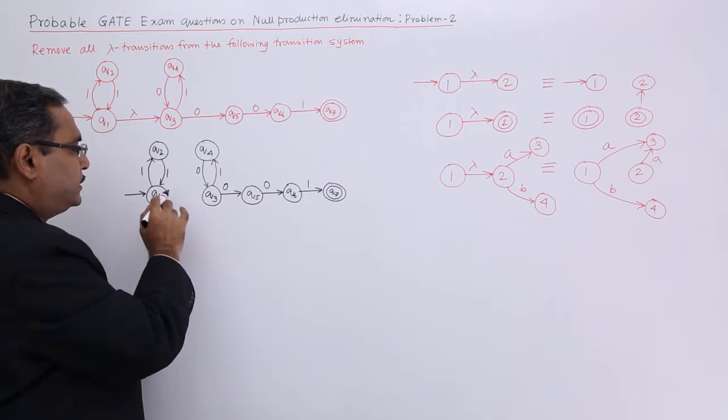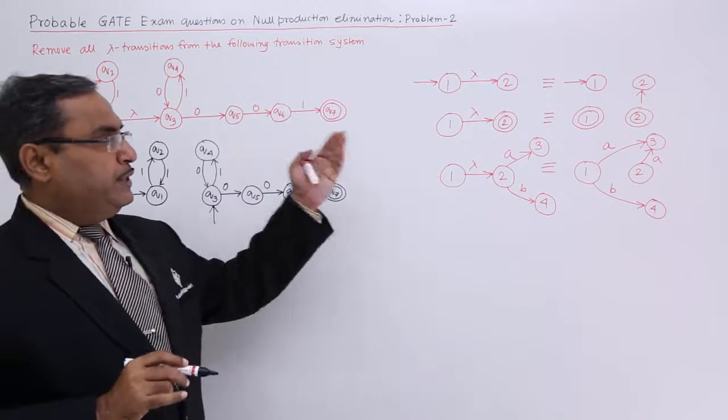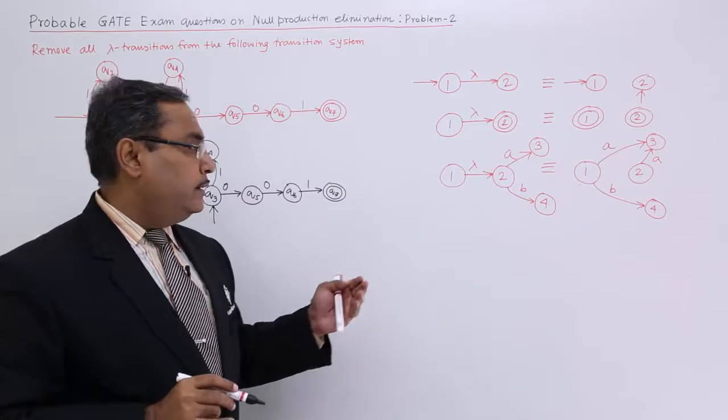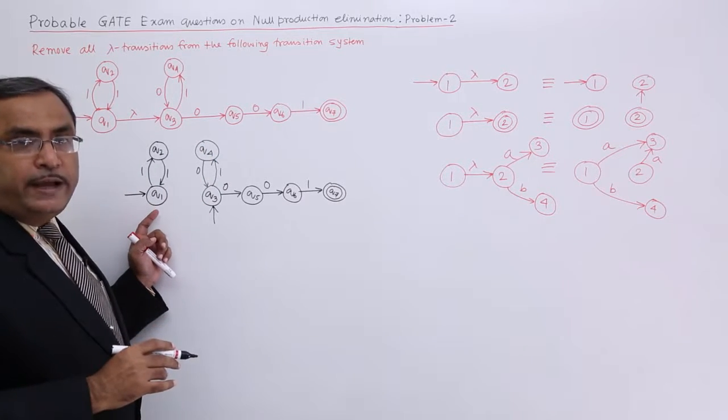Here it is initial state, so I should make this one as initial. Next one: if 2 is final, then make 1 also final. Here it is not a final state, so there is no need to make it a final state.